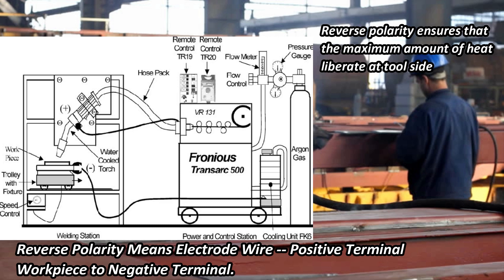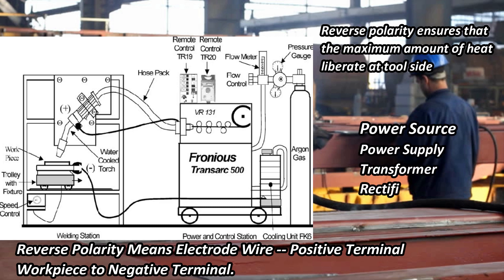Straight polarity can cause an unstable arc that results in large spatter. The power source consists of a power supply, a transformer, a rectifier which changes AC into DC, and some electronic controls which control the current supply according to weld requirements.